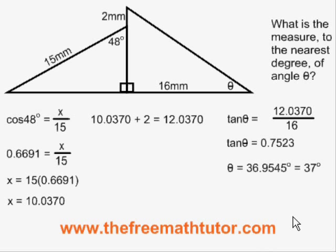But the question is asking us to round to the nearest degree, so our final answer is angle theta equals 37 degrees. At all times when working with these formulas, I take any value longer than four decimal places in my calculator and write it to four decimal places on paper, but I really use the full value in the memory of my calculator to avoid rounding until the final step. This makes my final answer more accurate. This is a multiple-step SOHCAHTOA situation.